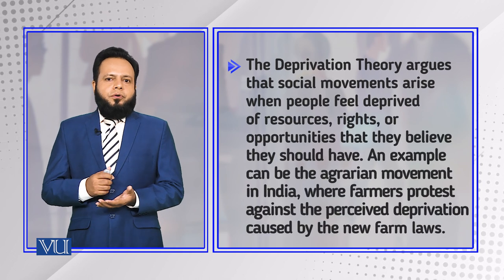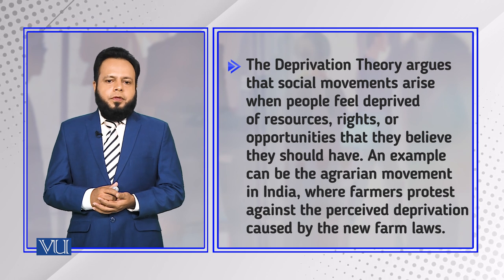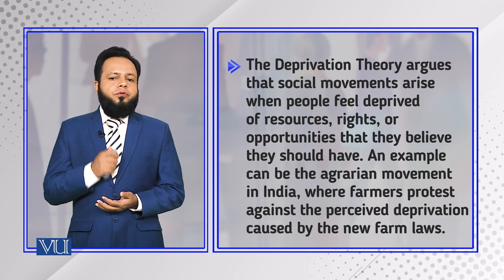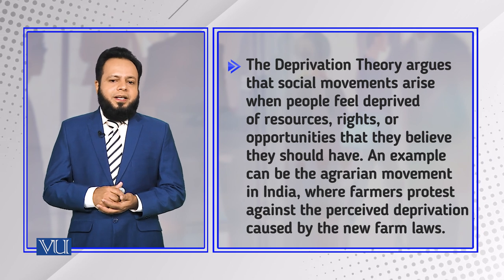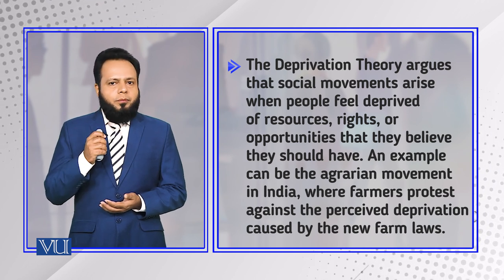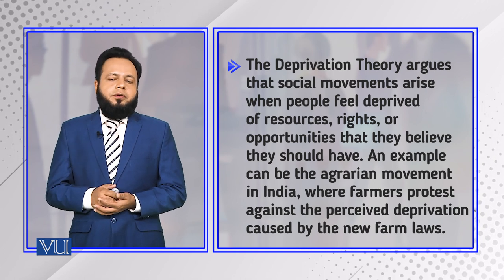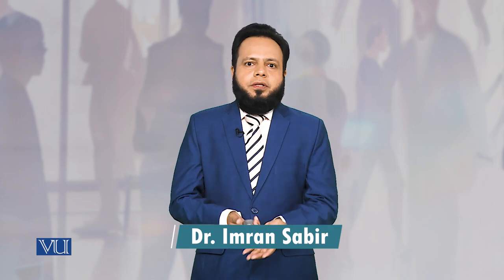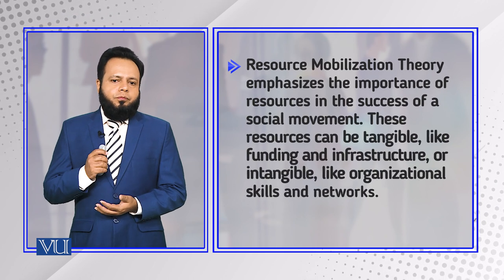The first perspective is deprivation theory, which argues that social movements arise when people feel deprived of resources, rights, or opportunities that they believe they should have. An example is the agrarian movement of farmers in India, where they protested against the perceived deprivation caused by the new farm laws. When there is relative deprivation and people feel they are not being given their adequate share of rights, they begin to agitate against that situation.